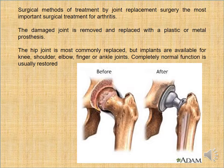If medical management fails and there is severe deformity of the joints, we proceed to surgical treatment. Joint replacement surgery is the most important surgical treatment for arthritis — the damaged joint is removed and replaced with a plastic or metal prosthesis. The hip joint is most commonly replaced. Implants are also available for the knee, shoulder, elbow, finger, and other joints. Completely normal function is usually restored by the prosthetic joint.